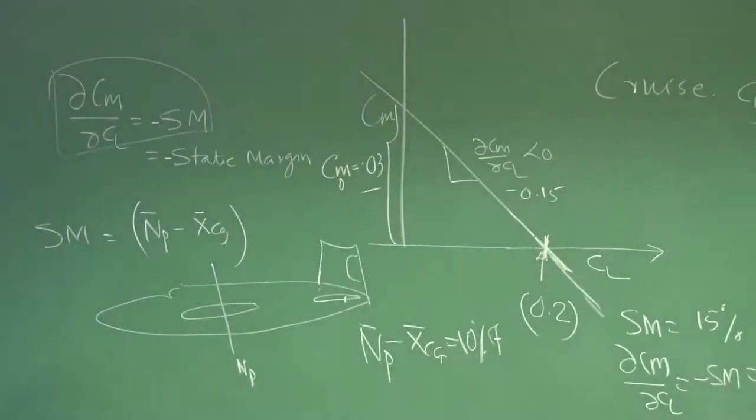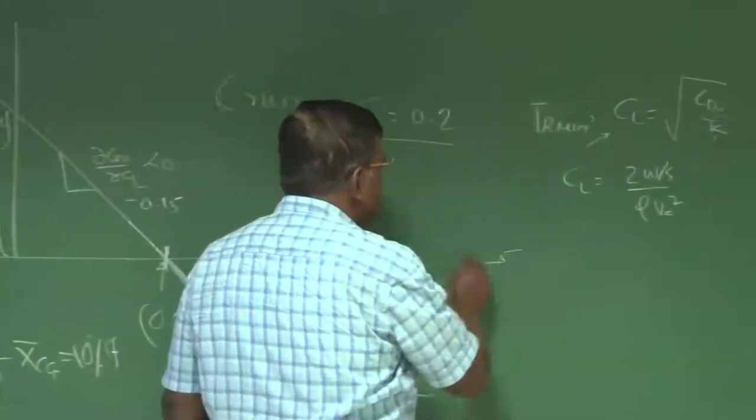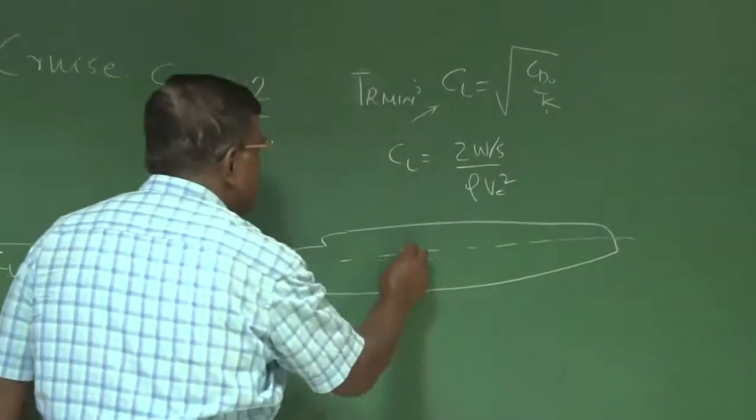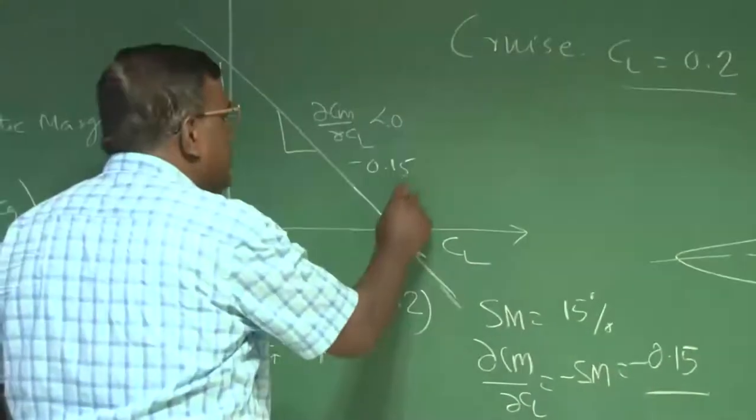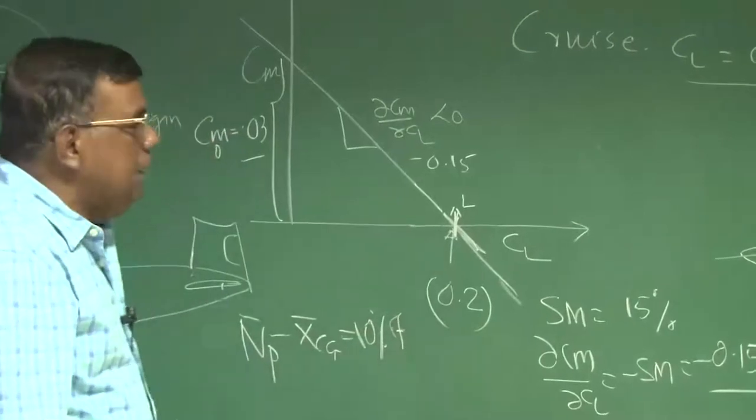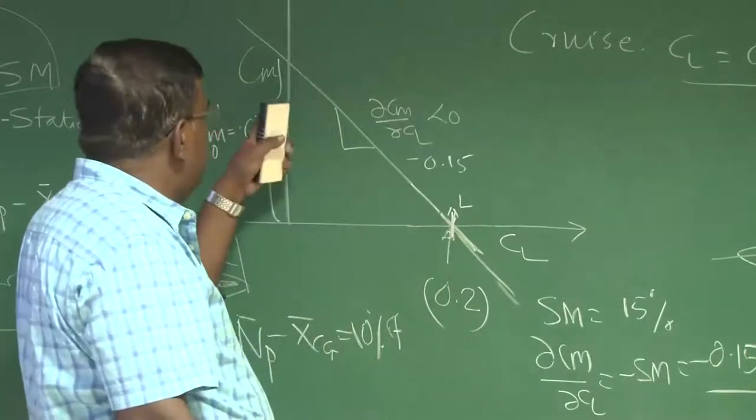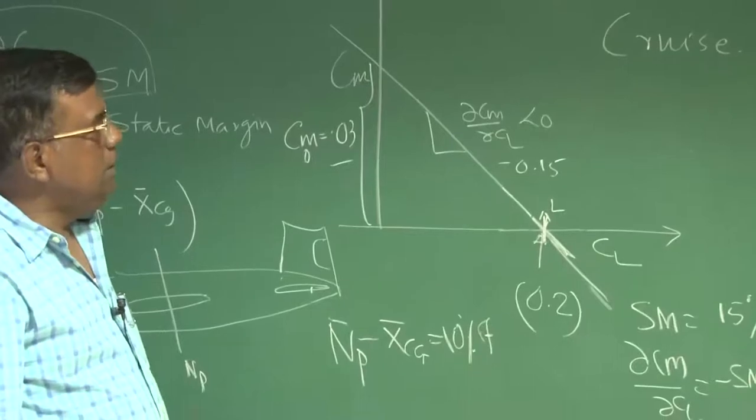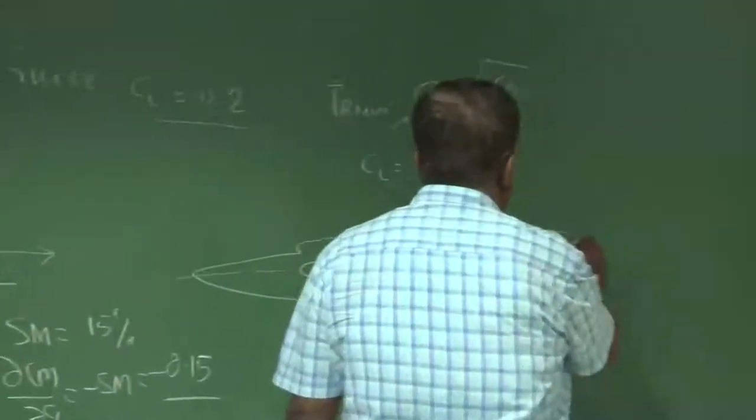I need to put the wing, this is the fuselage which we have designed so far. I need to put the wing such a way that it should be able to produce that much lift which is required for a given dynamic pressure at Cl 0.2. At the same time, the aircraft should be statically stable. Further, the Cm0, that Cm at Cl equal to 0, should be around 0.03. These three conditions it has to satisfy. As far as the slope is concerned, to make it negative, we use horizontal tail.